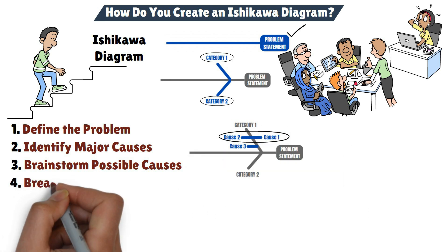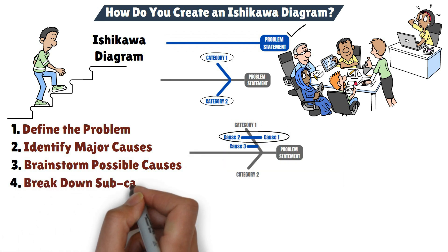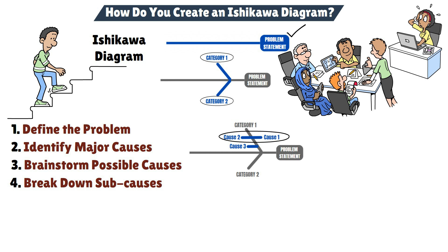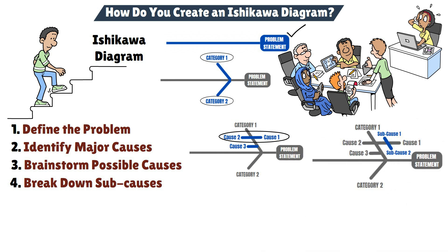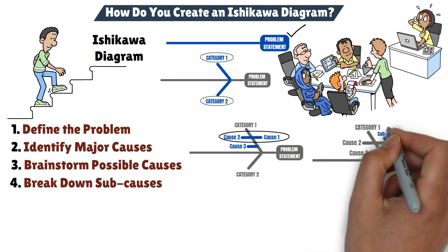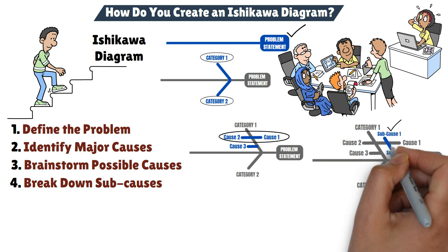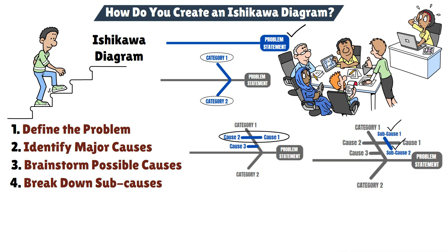Step 4: Break down subcauses. Don't stop at just one level of causes. For each cause you identify, dig deeper to uncover potential subcauses. Keep going until you feel you've reached the root cause of the issue.